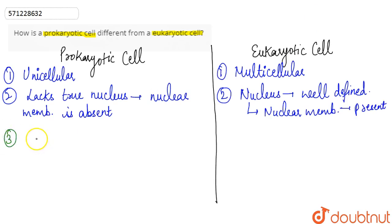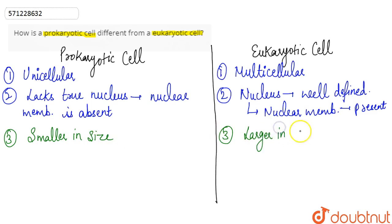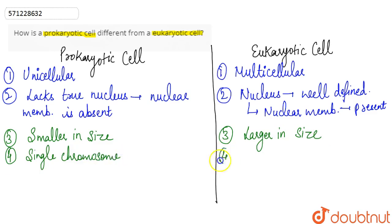The third point of difference is that the prokaryotic cell is smaller in size, whereas eukaryotic cells are larger in size. Additionally, there is only a single chromosome in the prokaryotic cell, whereas in the case of eukaryotic cells, there is more than one chromosome present.